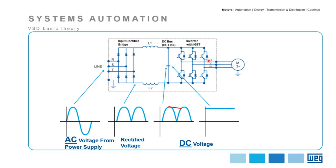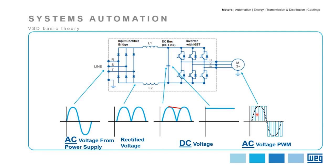This is where the magic happens. The inverter, which is composed of six IGBTs (Insulated Gate Bipolar Transistors), converts the DC voltage to an AC voltage by using the PWM (Pulse Width Modulation) technique. The IGBTs switch in such a way that these voltage pulses can be controlled, and as a consequence, a variable voltage and frequency at the output can be generated. This is a basic understanding of the VFD.